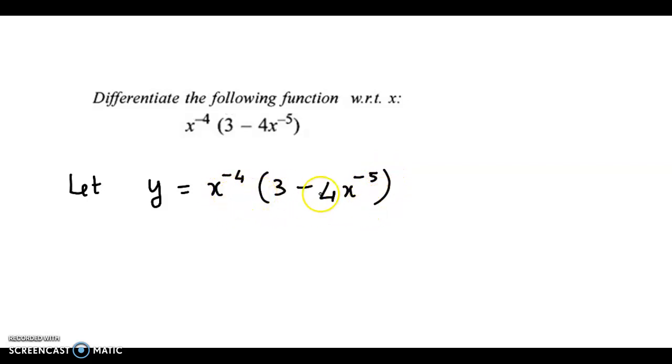Now we open the brackets. We have y equals x^(-4) times 3, which is 3x^(-4), minus x^(-4) times x^(-5).